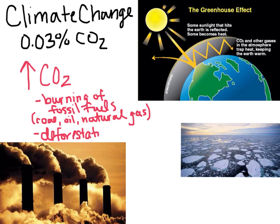Burning fossil fuels — coal, oil, and natural gas — that were formed from organisms that died millions of years ago releases all of that carbon that's been trapped inside those organisms and underground up into the atmosphere. Deforestation, when you remove trees, remember trees take in carbon dioxide for photosynthesis. So when you remove those trees, you're removing a carbon sink. Also, oftentimes the trees are burned, which just releases more carbon dioxide.